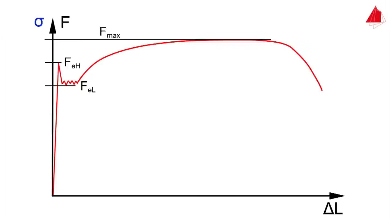The upper yield strength ReH is calculated by dividing the force FeH by the original cross-sectional area S0. The lower yield strength ReL is defined in a similar way. The maximum force divided by the original cross-sectional area is called tensile strength Rm.